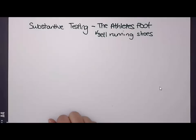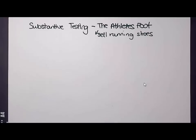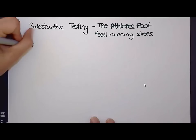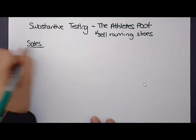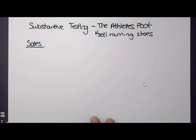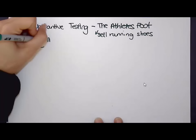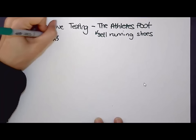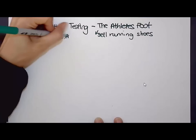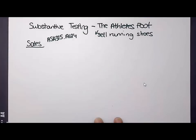Let's start with something really basic — how we would test sales. When I think about sales, I know I need to think about my transaction assertions, so I'm going to start by listing those assertions first. According to ASA 315, paragraph A124, our assertions relating to sales will be occurrence.